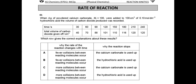The volumes of carbon dioxide collected are: 40, 70, 88, 101, 110, 116, 120, 120. At 210 seconds, the volume reaches 120 and does not increase further — the reaction is complete. There is no further increase in the volume of carbon dioxide produced.